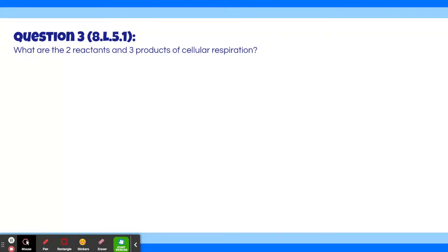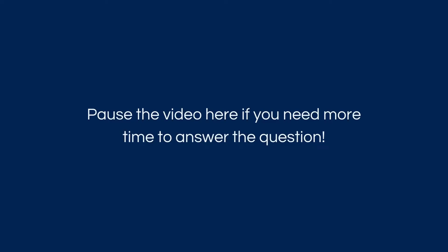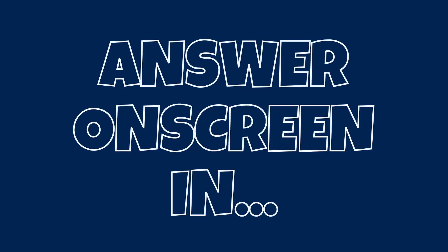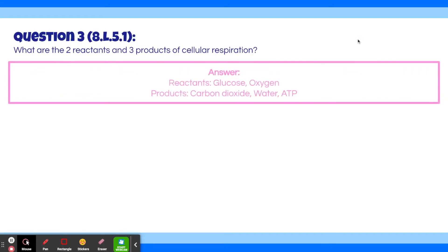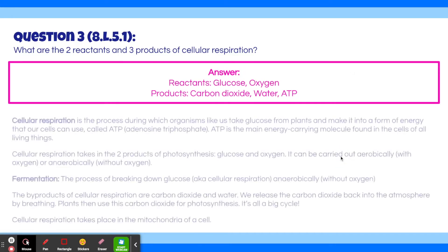Moving on to question 3: What are the two reactants and three products of cellular respiration? The reactants are glucose and oxygen, and the products are carbon dioxide, water, and ATP.